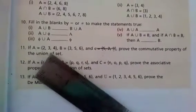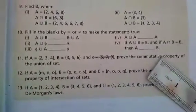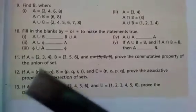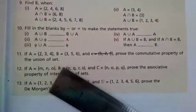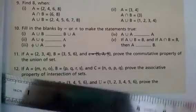Look at question number 11. If A set is {2, 3, 4}, B set is {3, 5, 6}, prove the commutative property of the union of sets. Students, let's solve this question. Now, look at the board.